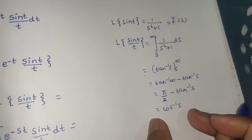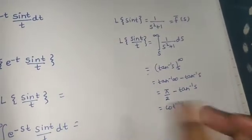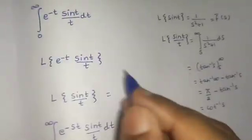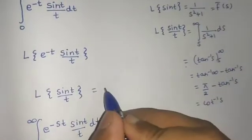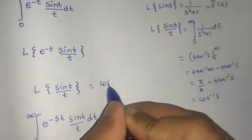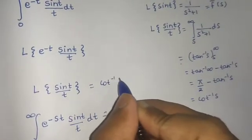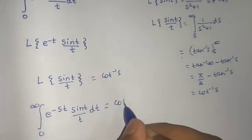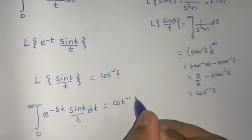This is what we got from the formula: Laplace of sin(t)/t equals cot⁻¹(s).